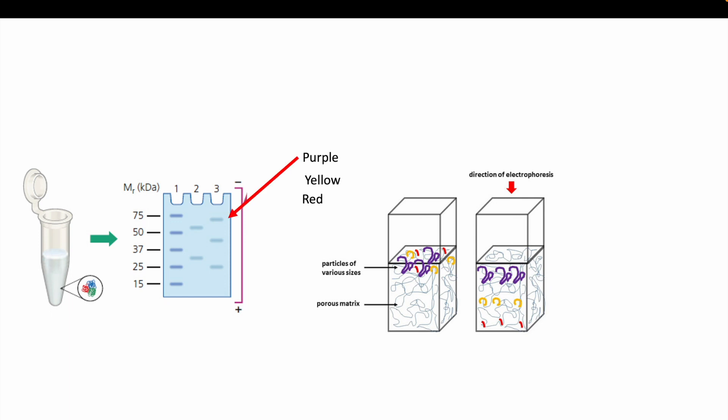We could assume that the purple protein, being the largest, is going to move the least as it will have to overcome friction and will interact with the porous matrix of the gel. The medium-sized band, we could assume would be the yellow as it is the second to biggest band, and the red protein, we could assume, moved down the well the furthest as it is the smallest and will have the least amount of trouble moving down the band.